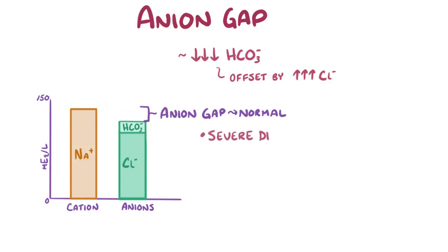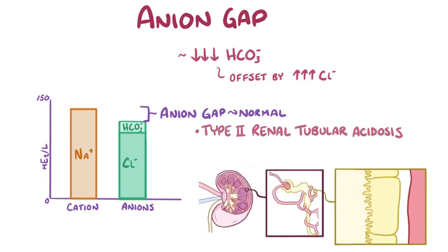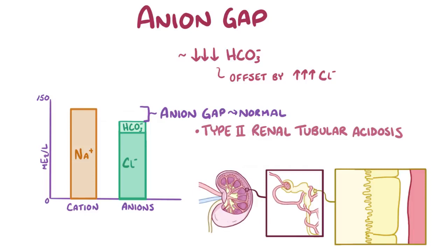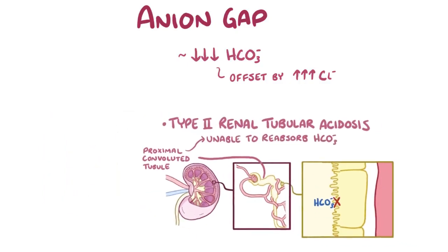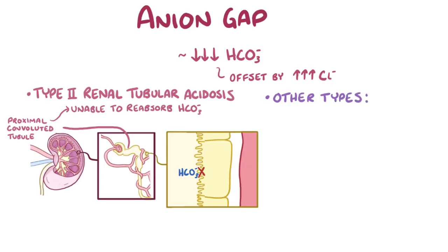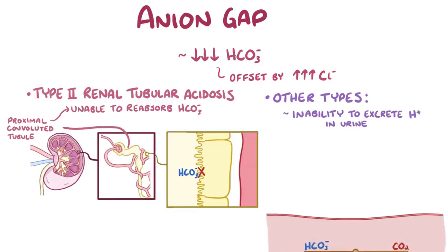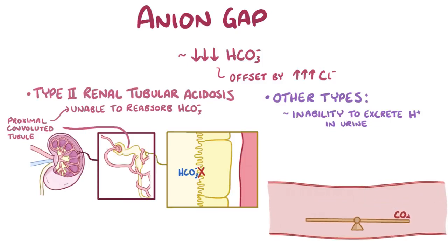The most common cause is severe diarrhea, where bicarbonate-rich intestinal and pancreatic secretions rush through the gastrointestinal tract before they can be reabsorbed. Another cause is type 2 renal tubular acidosis, which is the most common type of renal tubular acidosis, and develops because the proximal convoluted tubule, which is a part of the nephron, is unable to reabsorb bicarbonate. The excessive loss of bicarbonate results in a low plasma bicarbonate concentration, which ends up lowering the pH.